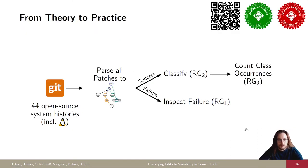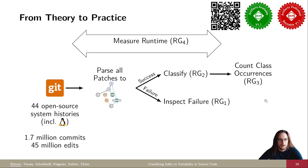Then we also perform an empirical evaluation based on 44 open source software systems, including the Linux kernel. So in total, we analyze 1.7 million commits, which include about 45 million edited source code lines. We parse all patches within the history to a variation diff each. If this fails, we inspect the failure because this might give us a clue about if our variation trees are complete or not. If parsing was successful, we classify the edits and then we count the class occurrences. And last but not least, we also measure the runtime of the whole process to see if this process can be automated and scales.